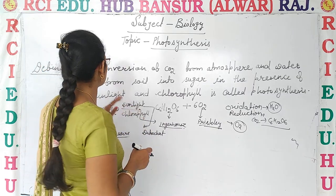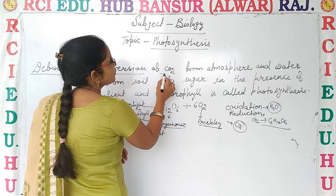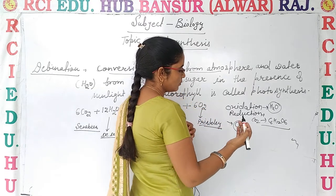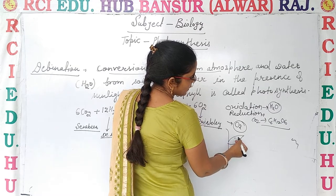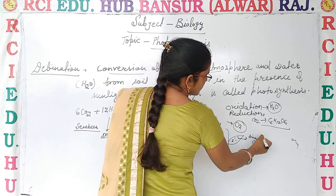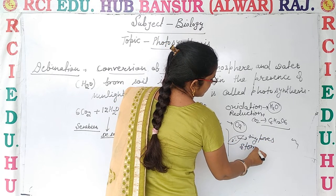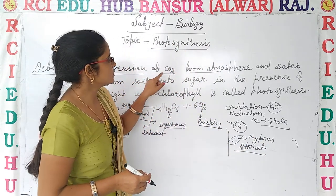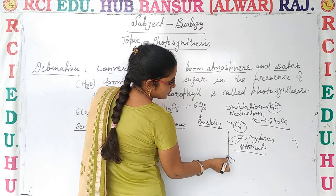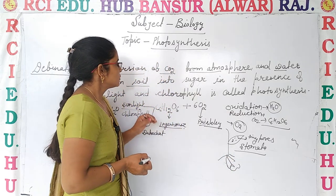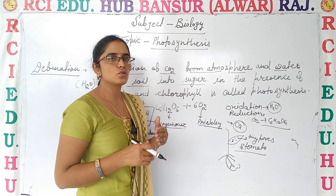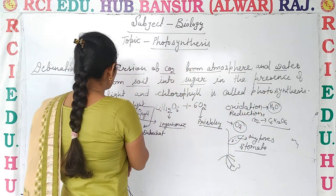So let's discuss the proper definition of photosynthesis. It is the conversion of CO2 from the atmosphere — because plants absorb CO2 from the atmosphere through the stomata present in the leaves. Stomata are the tiny pores present over the leaf surface. Plants also absorb water from the soil through their root system. So photosynthesis is the conversion of CO2 from the atmosphere and water from the soil into sugar, in the presence of sunlight and chlorophyll.